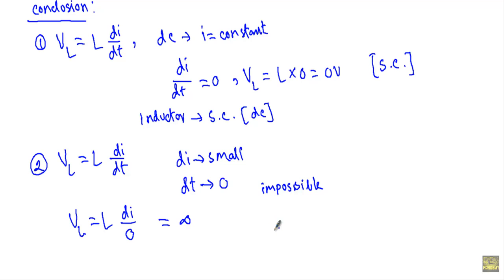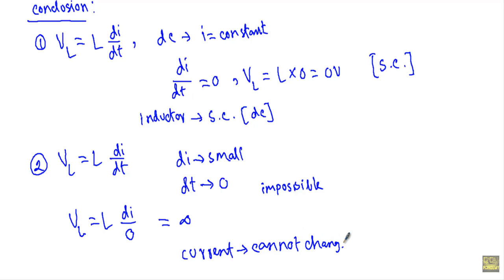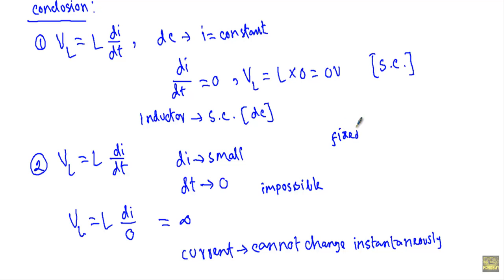So we assume that the current through the inductor cannot change instantaneously — that is, within a time interval dT = 0. When dealing with an inductor, you will see that the inductor current increases gradually towards a fixed or constant value.